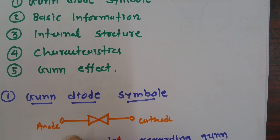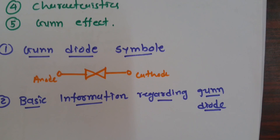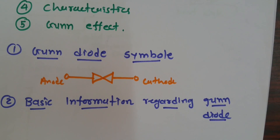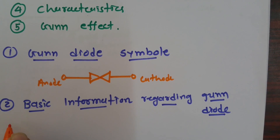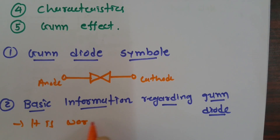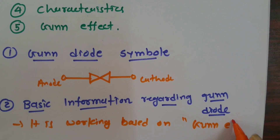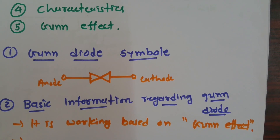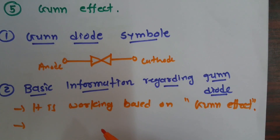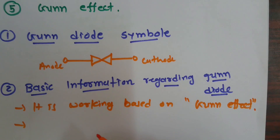Now let us understand some basic information about the GUN Diode. The GUN Diode works based on the GUN effect. It was discovered by J.B. GUN in 1962.